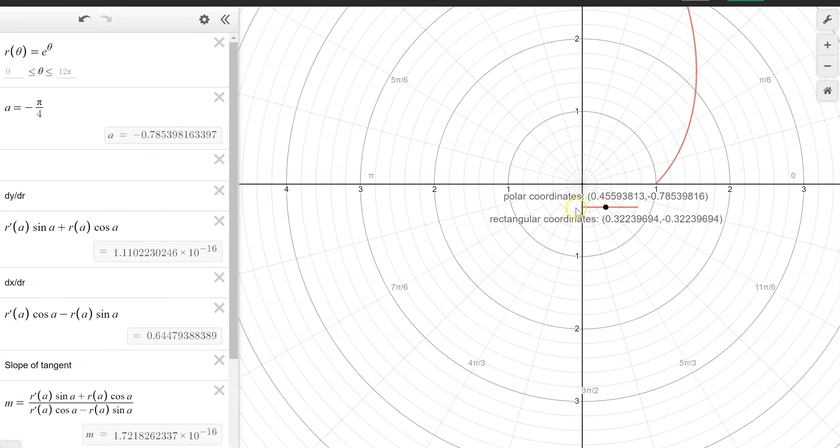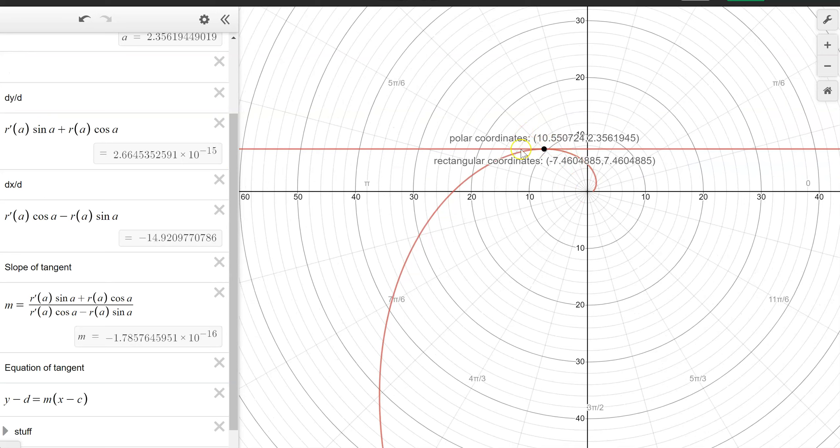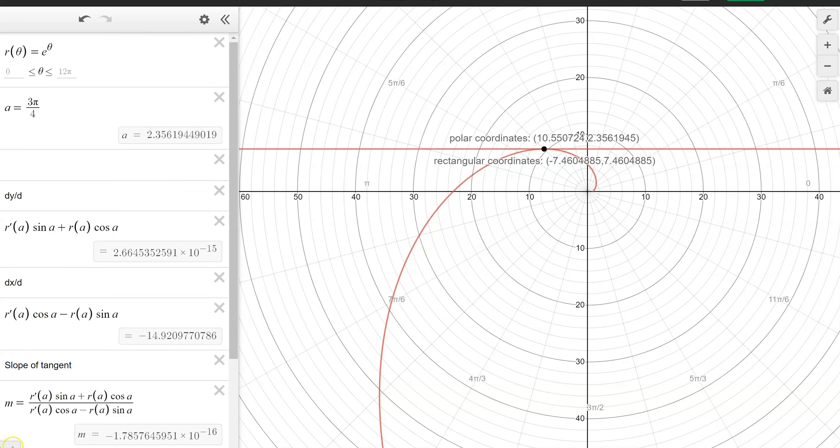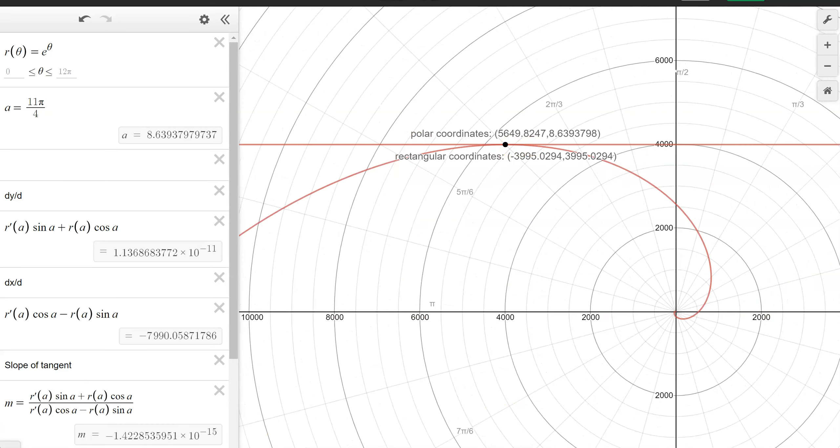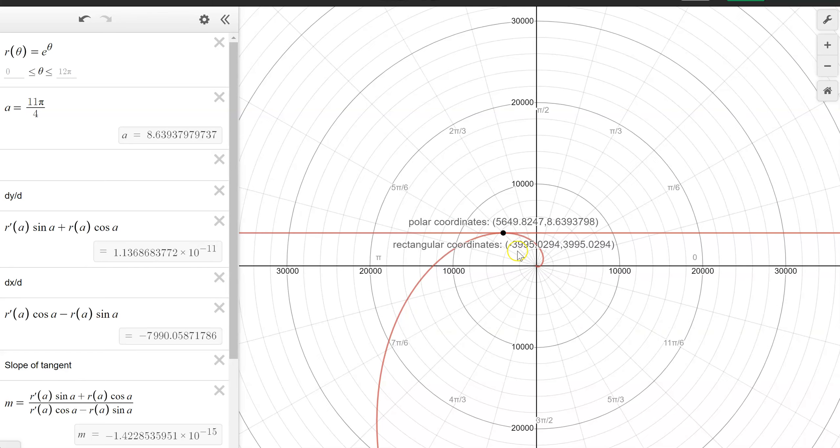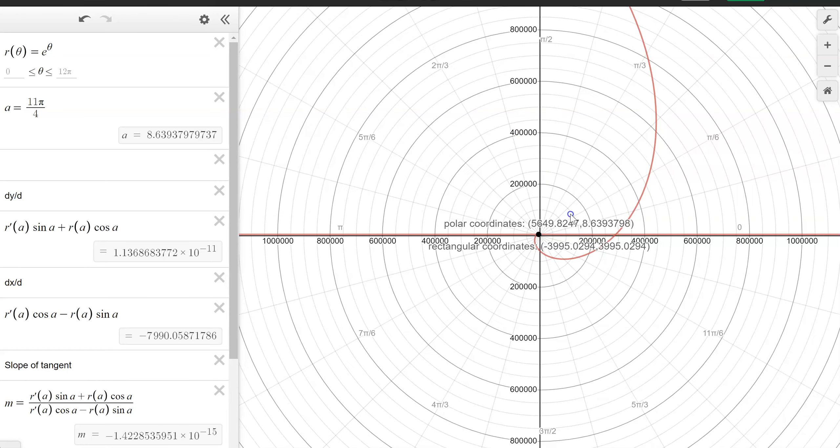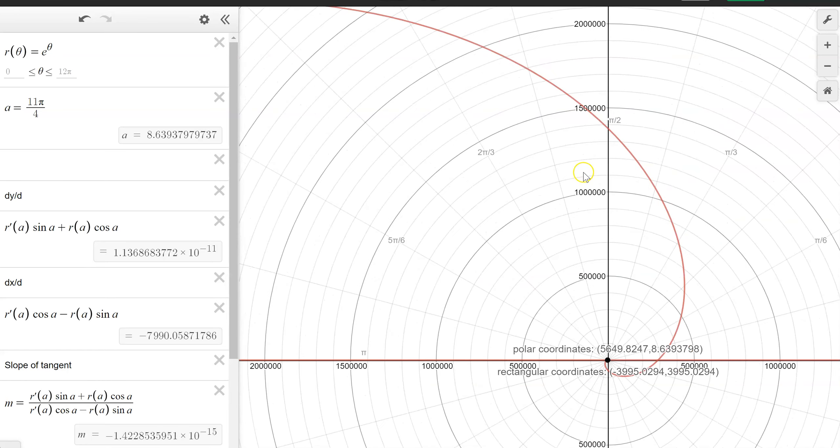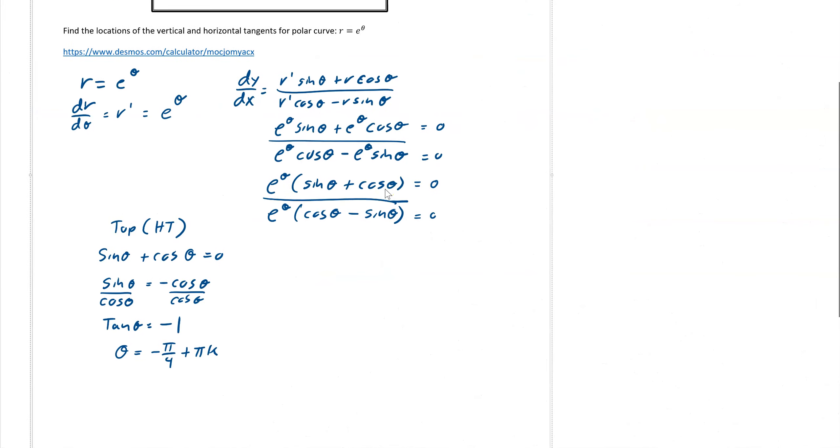And so there is our horizontal tangent, just like before. And then we're going to add π to it. We get it right there. There's our next horizontal. And if we keep doing this, you can see there's our 7π/4, 11π/4. And we would just keep continuing forever as we keep scrolling out. So every π from that negative πk, we will keep hitting horizontal tangents. So it works perfectly.